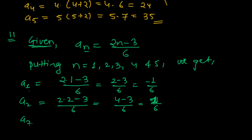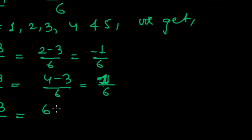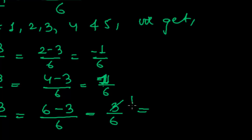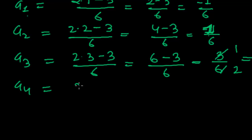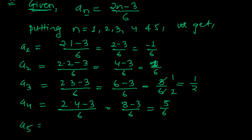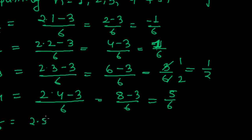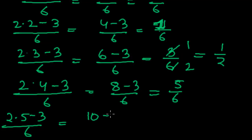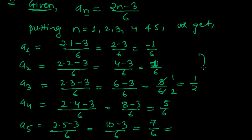a_3: (2×3 - 3)/6 = (6-3)/6 = 3/6 = 1/2. a_4: (2×4 - 3)/6 = (8-3)/6 = 5/6. a_5: (2×5 - 3)/6 = (10-3)/6 = 7/6. So we got the first five terms of the second sequence.